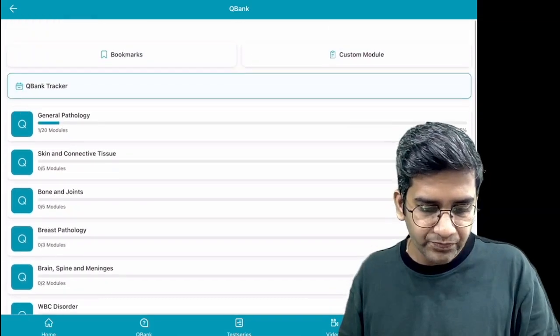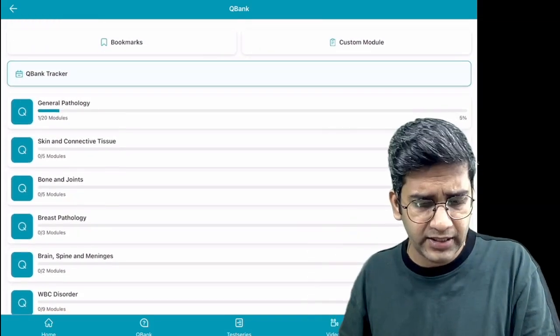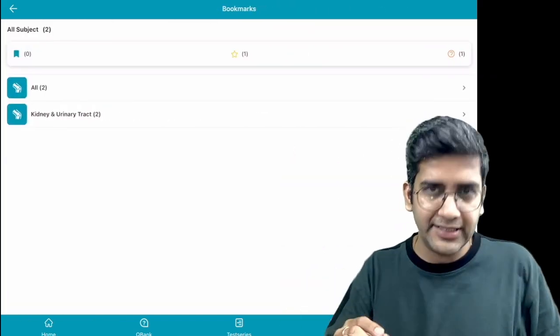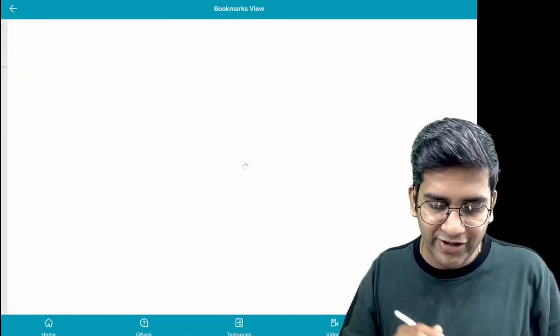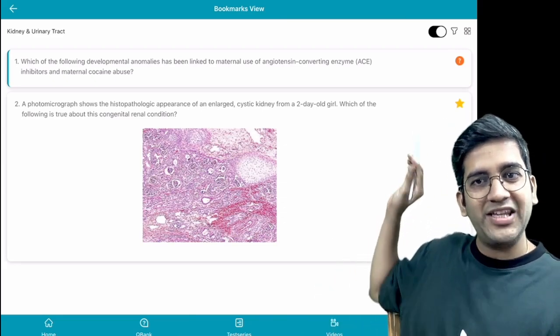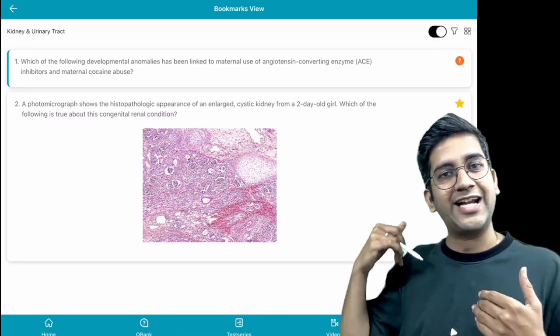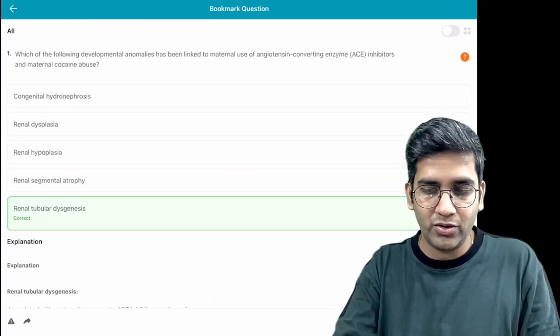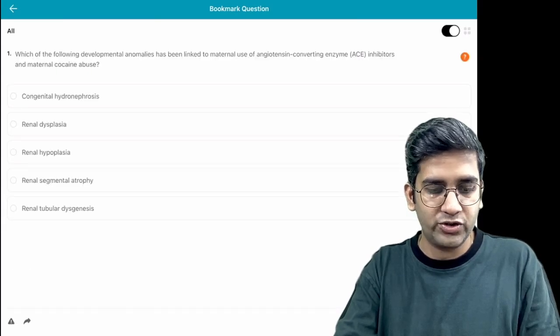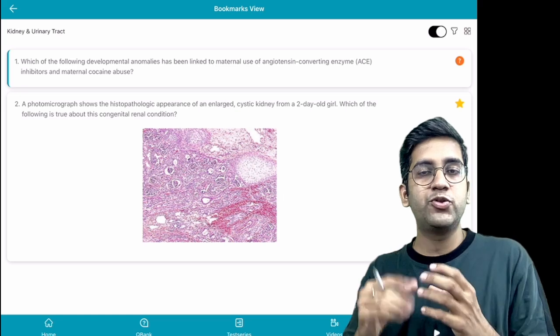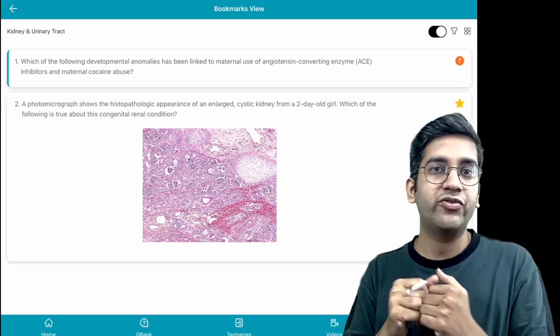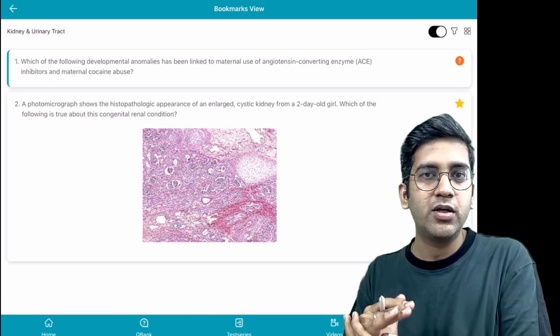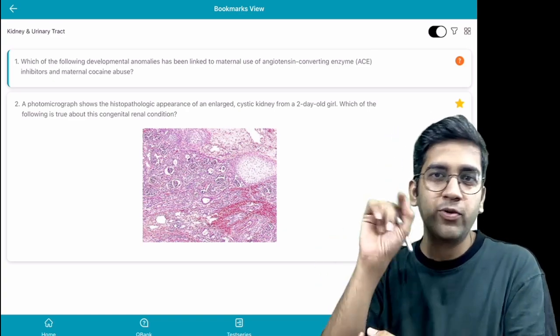Let's go to the bookmark module. In the kidney and urinary tract, I did bookmark something. I put one as query and one as star, so both of them are categorically bookmarked. Here also, same thing: I know the right answer, I ignore the right answer. It helps you to revise the high-yielding points. Something you're not able to read now, put a question mark and come back to the bookmark session.